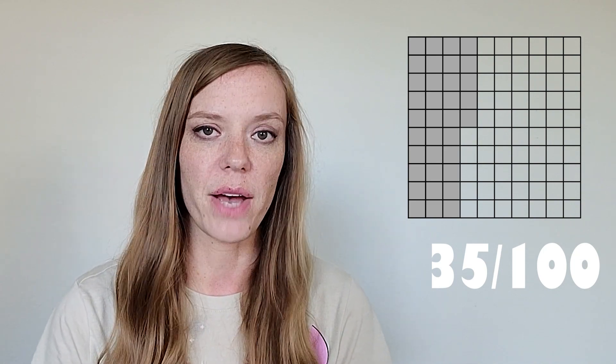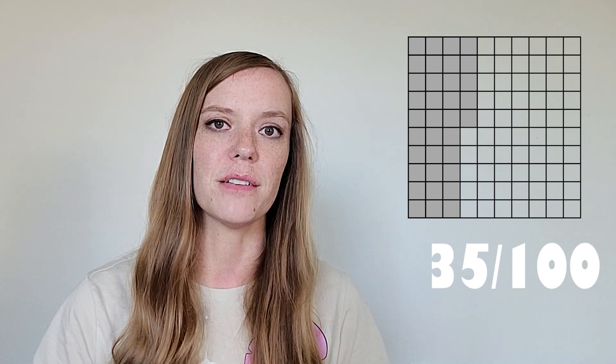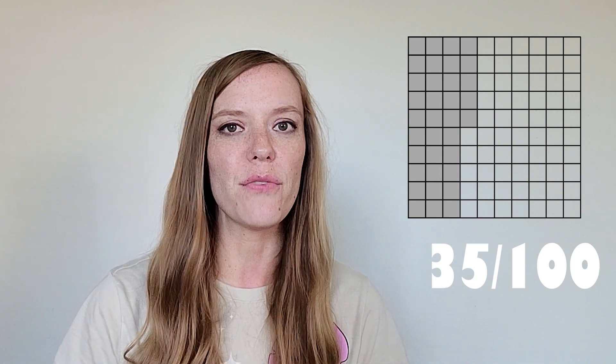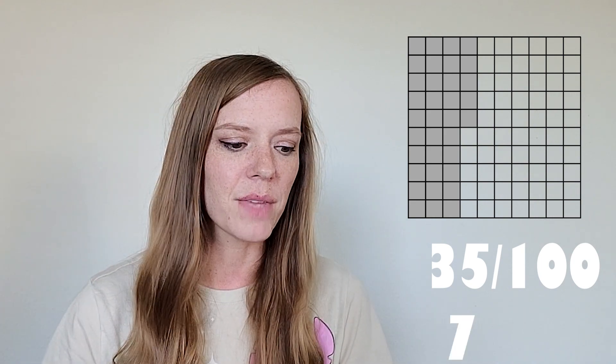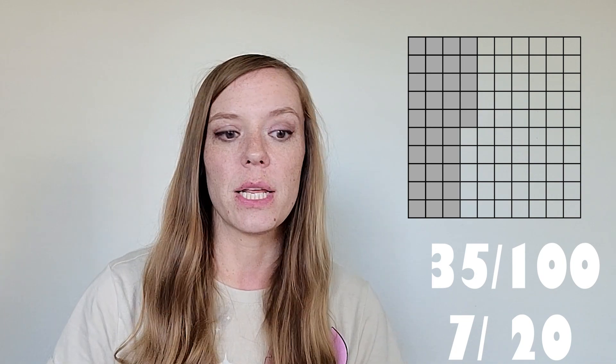So then I like to take a look at that fraction and see if it can be simplified at all. So 35 and a hundred, do they have anything in common that they can be divided by? You might be noticing that they both look like a five fact. So let's divide both 35 and a hundred by five. So 35 divided by five is seven and 100 divided by five is 20. So the simplest form of that fraction is 7 20ths.